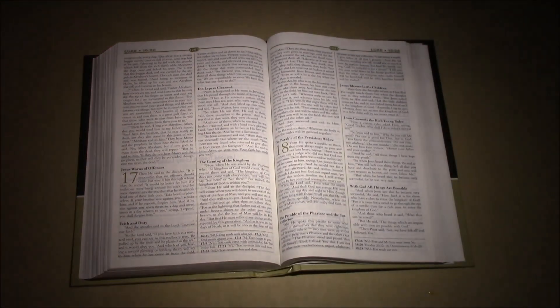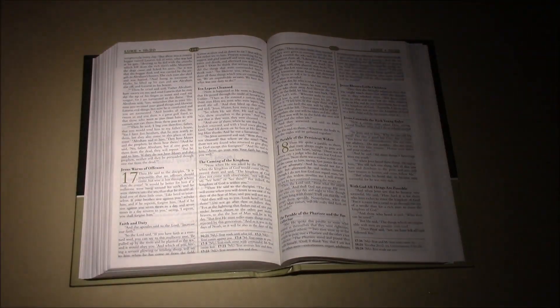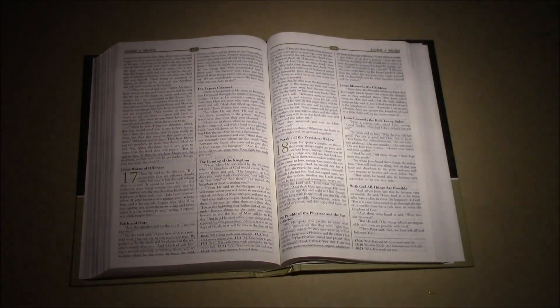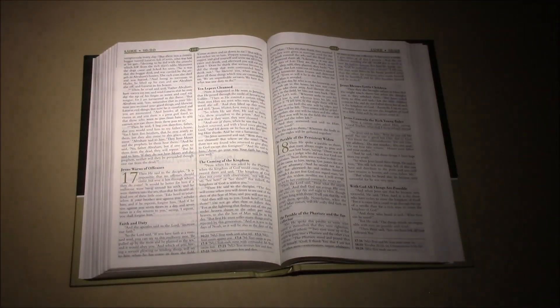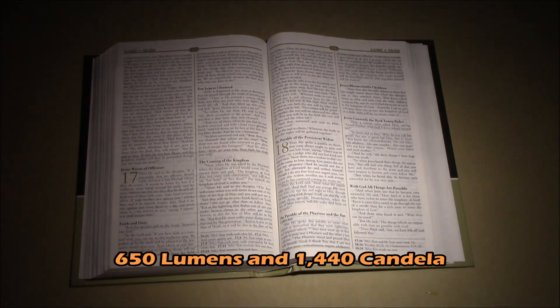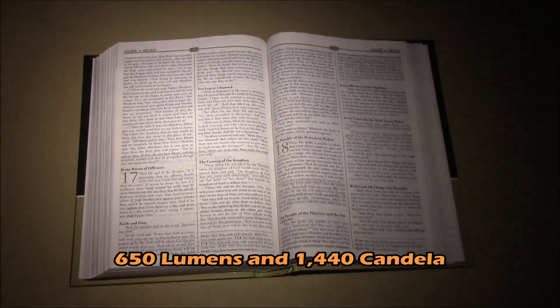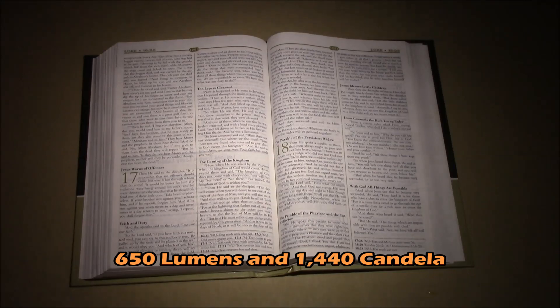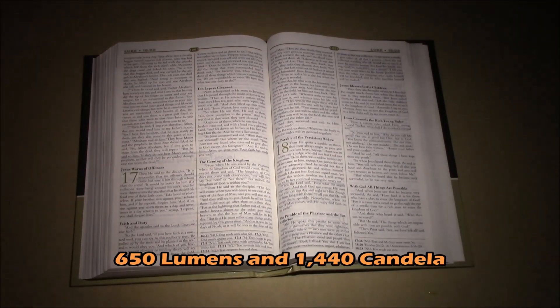Now contrast that to this image. This flashlight, used in the same position, is an Elzeta Bravo with a flood lens. So it's 650 lumens, higher lumen rating, but the candela is 1,440. Much lower candela, even though it has higher lumens. Notice how it evenly illuminates the page, makes reading very easy.